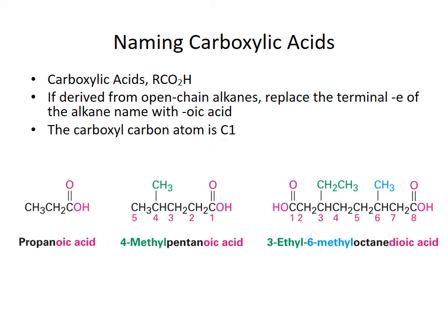To name carboxylic acids, we add the ending -anoic acid to the prefix. So you count the number of carbons and then add -anoic acid on the end. If I look at this first acid on the left, we can see there are three carbons, which is prop-, and then I add -anoic acid to it, giving propanoic acid.